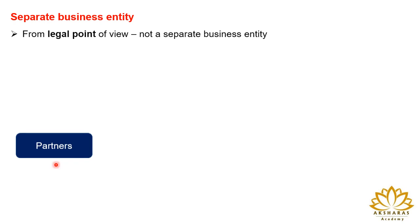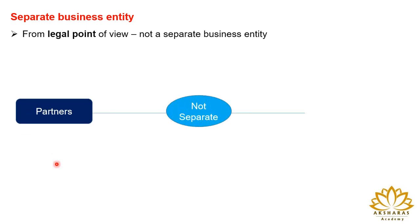From the legal point of view, the partners are not separate from the partnership firm. If the partnership firm is not able to meet its debts — that is, not able to pay liabilities to outsiders — in that case the partners' personal assets or private property may be taken to pay the liabilities of the partnership firm. So from the legal point of view, partners are not separate from the partnership firm.